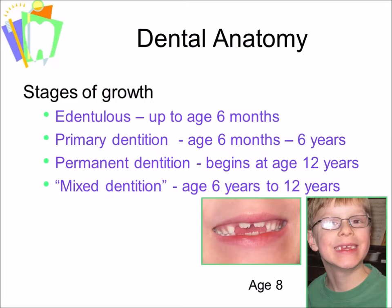In these pictures you see mixed dentition. There are two central incisors on the maxillary arch and you can barely see the incisal edges of the four mandibular incisors. These are permanent teeth because of the mamelons — the curved or scalloped edge. These are three mamelons.